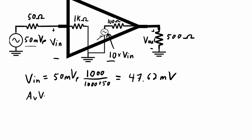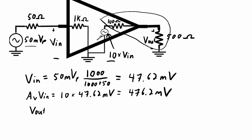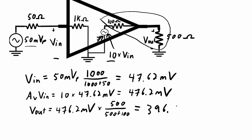We take the voltage across the 1 kilohm resistor: 1000 divided by 1000 plus 50 — that's my voltage divider ratio — and that works out to 47.62 millivolts. The dependent voltage source, which equals AV times Vin, with AV equal to 10, multiplies that 47.62 millivolt signal by 10 to get 476.2 millivolts. Finally, Vout is the voltage divider at the output: 476.2 millivolts multiplied by 500 over 500 plus 100.